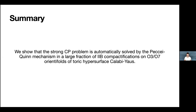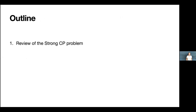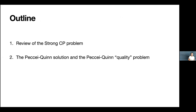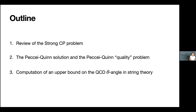To summarize what this talk is about in one sentence: we'll show that the strong CP problem is automatically solved by the Peccei-Quinn mechanism in a large fraction of type IIb compactifications on O3/O7 orientifolds of toric hypersurface Calabi-Yaus. By the end of the talk, I'll have explained what 'automatically' means and what the large fraction of compactifications is.